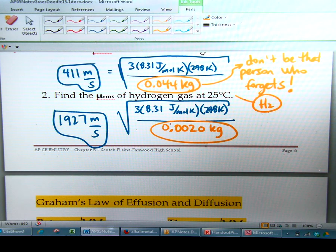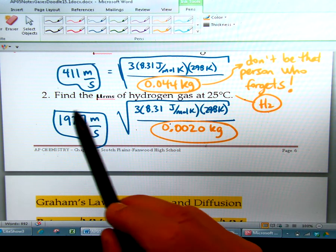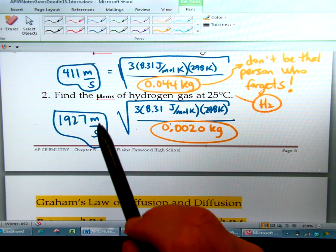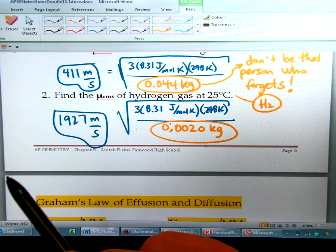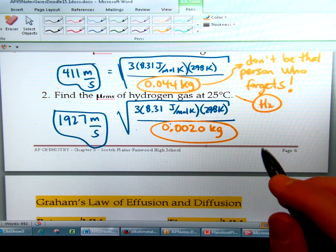We're continuing on page 7 of the AP notes on chapter 5 on gases. We just saw that hydrogen has an average speed of 1927 meters per second, whereas carbon dioxide has an average speed of 411 meters per second at 25 degrees.